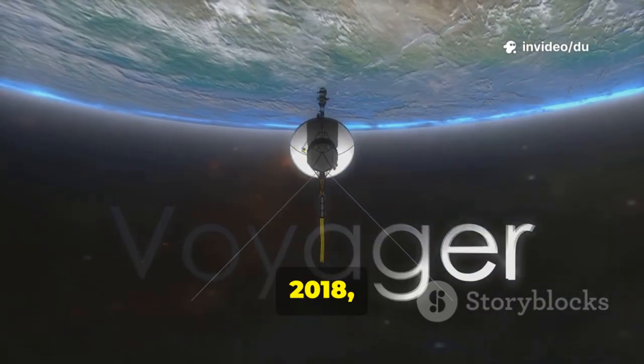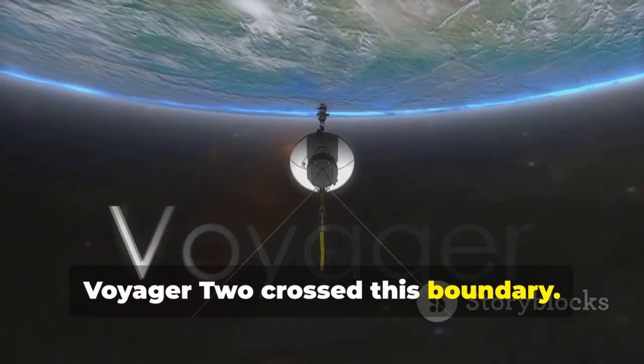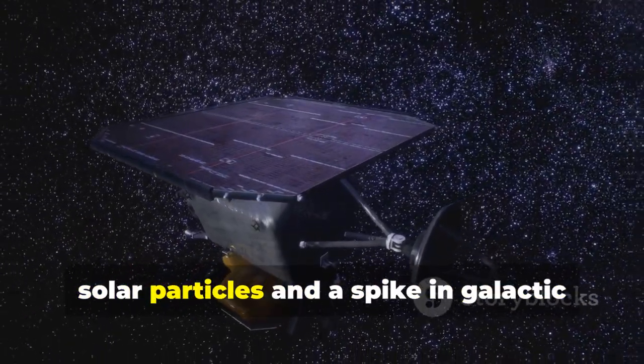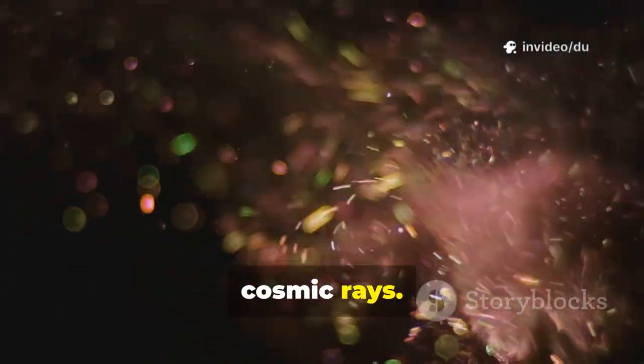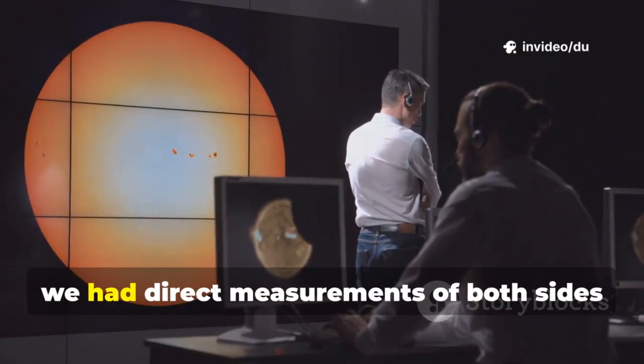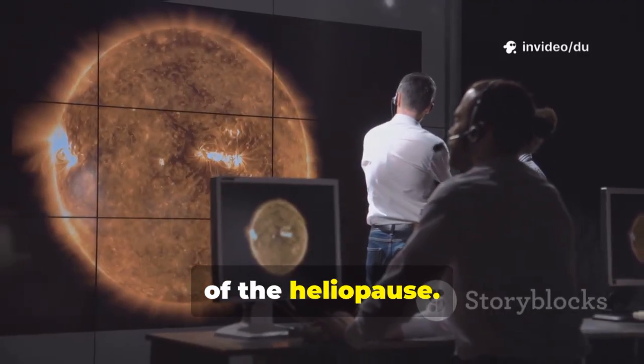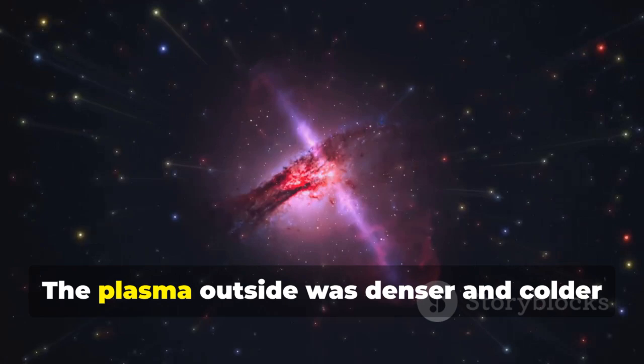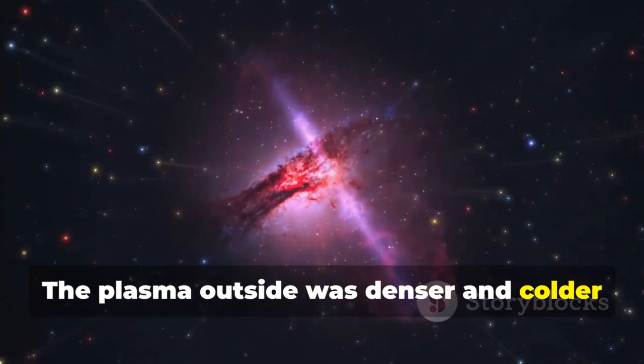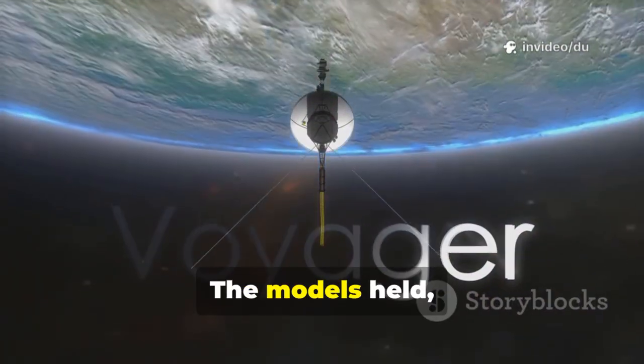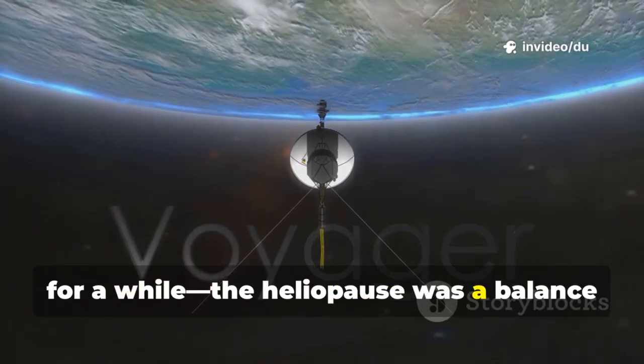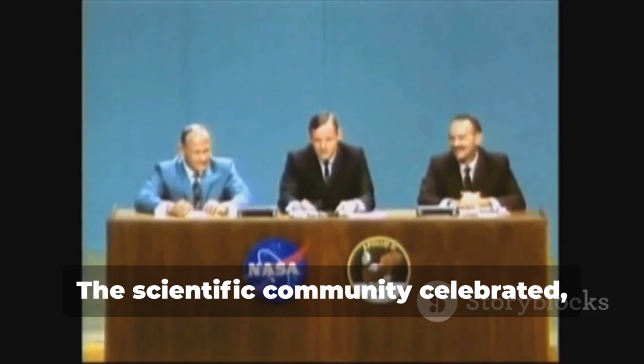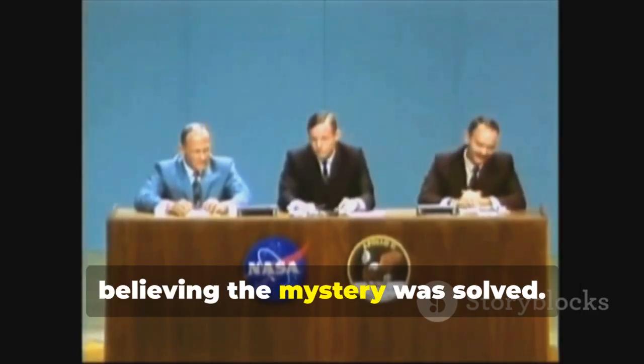On November 5, 2018, Voyager 2 crossed this boundary. Its instruments recorded a sudden drop in solar particles and a spike in galactic cosmic rays. For the first time, we had direct measurements of both sides of the heliopause. The crossing was sharp, a clear line, not a gradual fade. The plasma outside was denser and colder than expected. The models held for a while. The heliopause was a balance point between solar and interstellar forces. The scientific community celebrated, believing the mystery was solved.